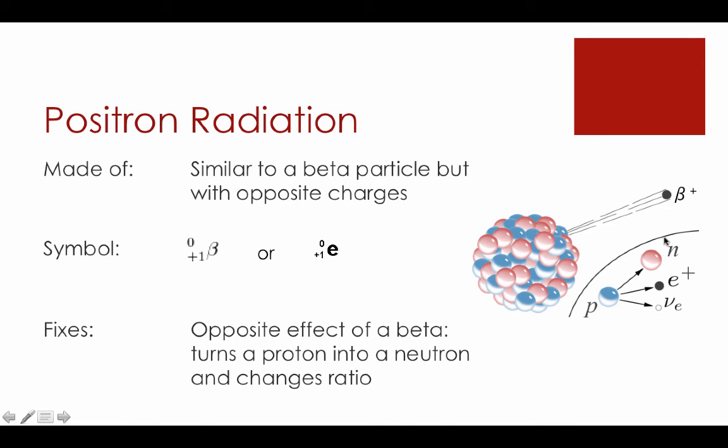Moving on to some of our more exotic types of radiation. The first three we just covered there are much more common. This is a little less common. We'll talk about positron radiation. Positron radiation is very similar to a beta particle, but it has the opposite charges. In fact, and while this isn't super important for us, I'll mention it anyway, a positron is actually a form of antimatter. It's the antiparticle to a beta particle.